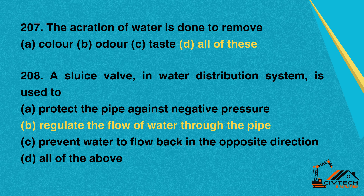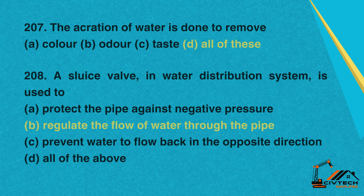Question 208: A sluice valve in a water distribution system is used to. A. Protect the pipe against negative pressure. B. Regulate the flow of water through the pipe. C. Prevent water to flow back in the opposite direction. D. All of the above. Correct option: B. Regulate the flow of water through the pipe.